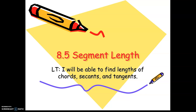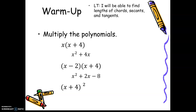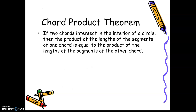Hey guys, we are going to be moving into the second half of unit 8 — 8.5 segment length. So we're going to be moving away from the angle measures and the arc measures and find lengths of segments in circles. You can add these to your brown theorem sheet and pause as necessary. We're going to do three theorems back to back to back, and then we'll do examples of each one.